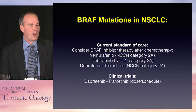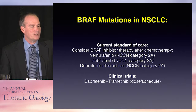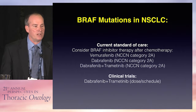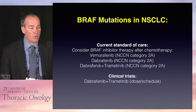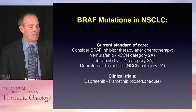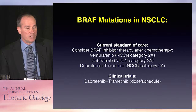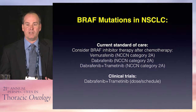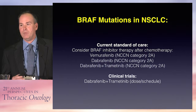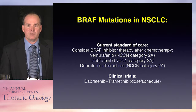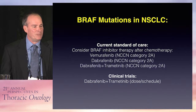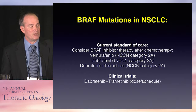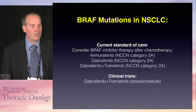For BRAF mutations, the current standard of care is to consider a BRAF inhibitor therapy after chemotherapy — either vemurafenib alone, dabrafenib alone, or dabrafenib and trametinib. All are listed in NCCN guidelines with a Category 2A recommendation. There are ongoing clinical trials with dabrafenib and trametinib, and likely we'll see trials of vemurafenib and cobimetinib as well. For these rare mutations, it looks like there are some valuable responses.